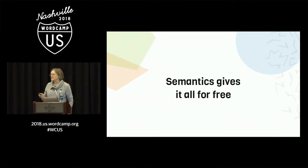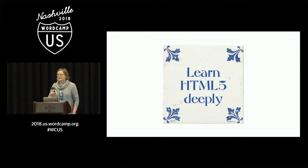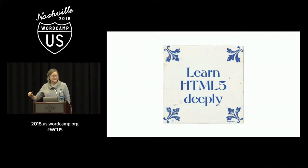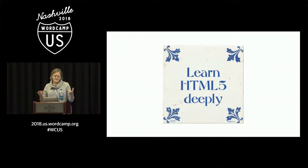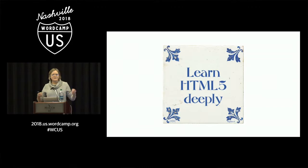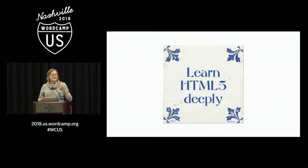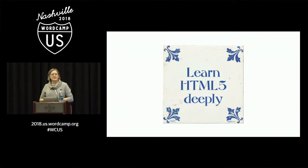Semantics gives you it all for free. Always go for HTML5 first. Learn HTML5 deeply before you learn ARIA, before you learn JavaScript, because that's what interacts with your browser. All your JavaScript, all your framework, all your PHP — what it does is generate HTML5, and that must be correct. That's what interacts with all the devices, and we get more and more devices interacting with your website. If you use good semantic HTML5, then it works.